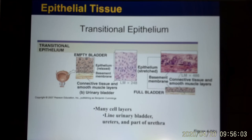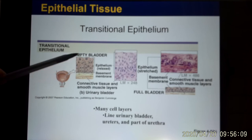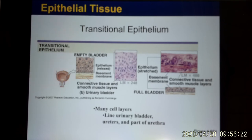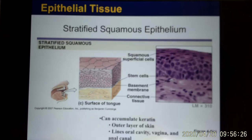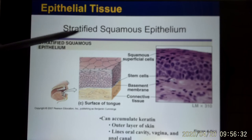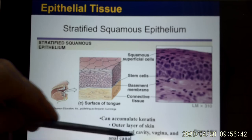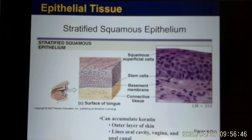Transitional epithelium has multiple layers that can change — from ten to eight to six — as the organ expands to hold urine, so it's found in the renal system. Stratified squamous has multiple flat layers used in areas needing protection, like the oral cavity, anus, vagina, and your skin.